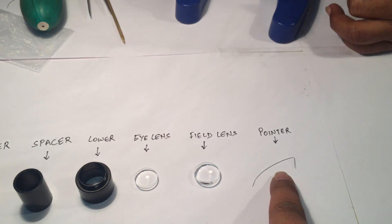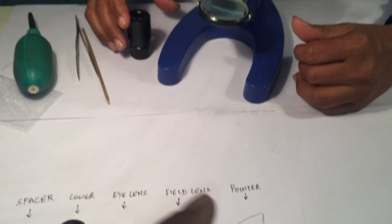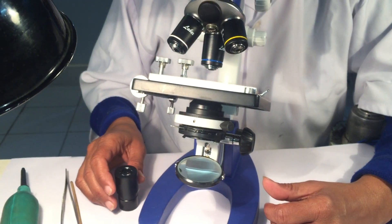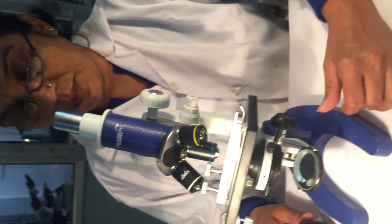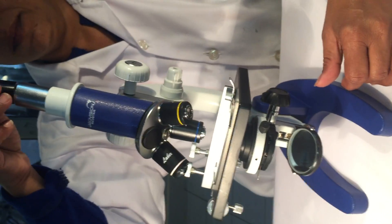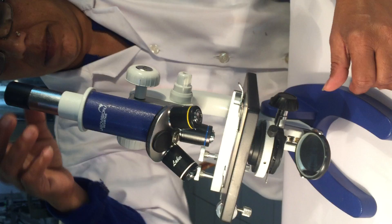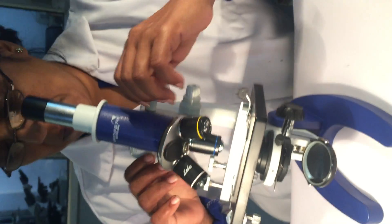In our second video, we will tell you how to fix the pointer. So now we are placing the eye lens, placing the 10X eyepiece on our microscope and then we will check the clarity. Thank you so much folks.